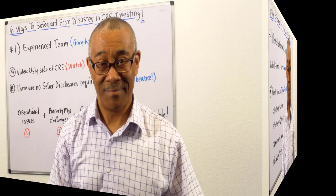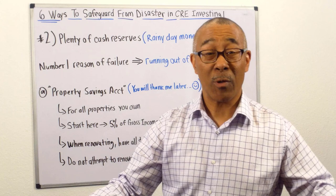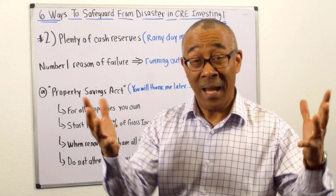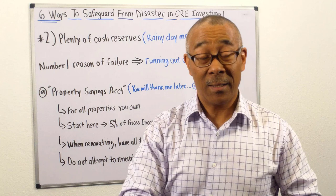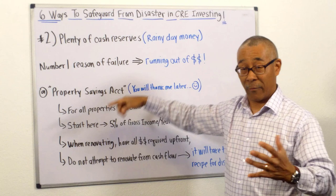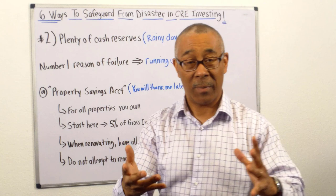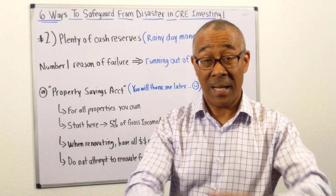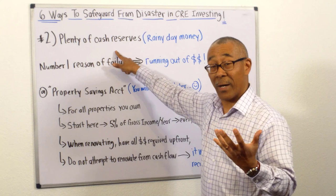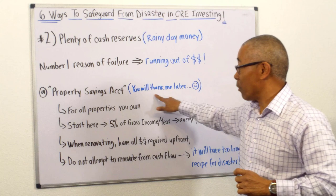Number two is to have plenty of cash reserves on hand — rainy day money for when stuff happens. When you own commercial real estate, stuff happens and you need cash available to quickly remedy the situation and stop a potential disaster. The number one reason for failure when renovating a commercial property — fixing up apartments or renovating a commercial space — is running out of money. I've seen this all over the country. Do not let that happen.